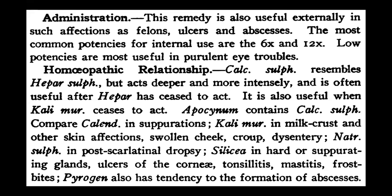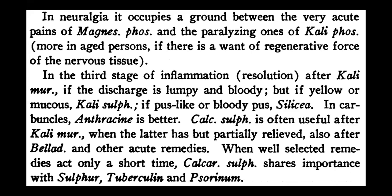Mastitis and frostbite are also very common indications for Calcarea sulph. Pyrogen also has a tendency to formation of abscesses, but in Pyrogen there is septicemia — not just a superficial infection, but blood infection. A characteristic feature of Pyrogen is proportional tachycardia: the patient's temperature might be 100°F but the pulse rate is 140–150. No other remedy matches — it is Pyrogen. In cases of fever not decreasing over a long duration, always think of Pyrogen.